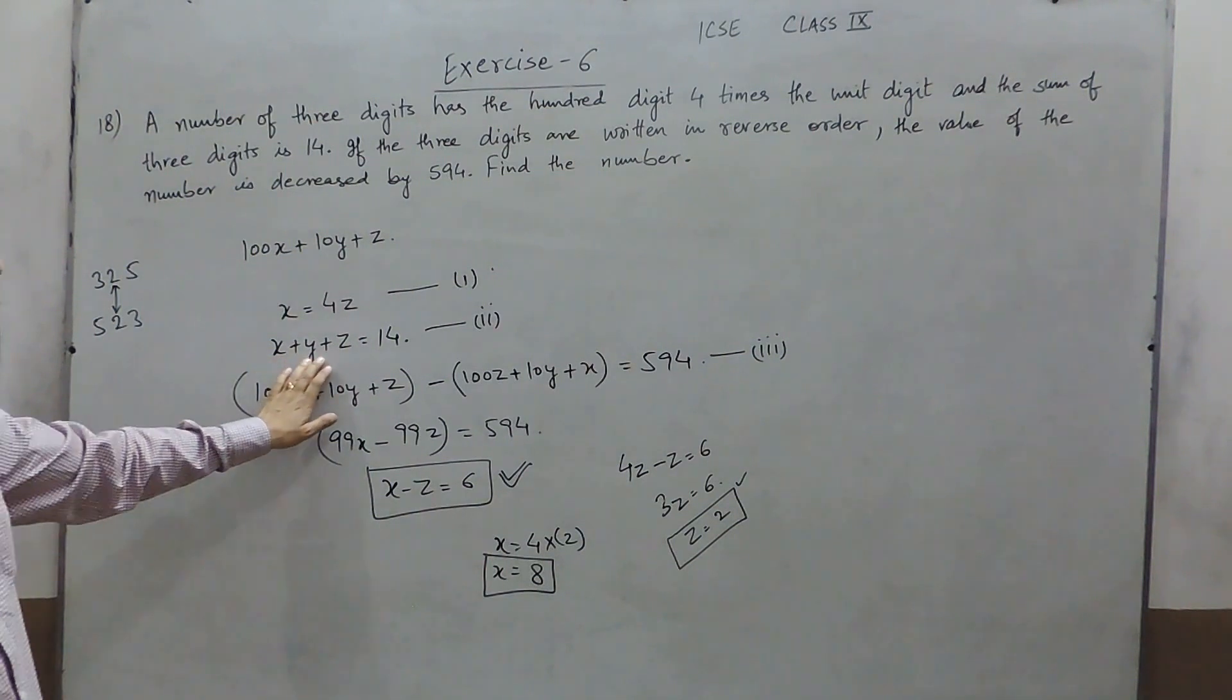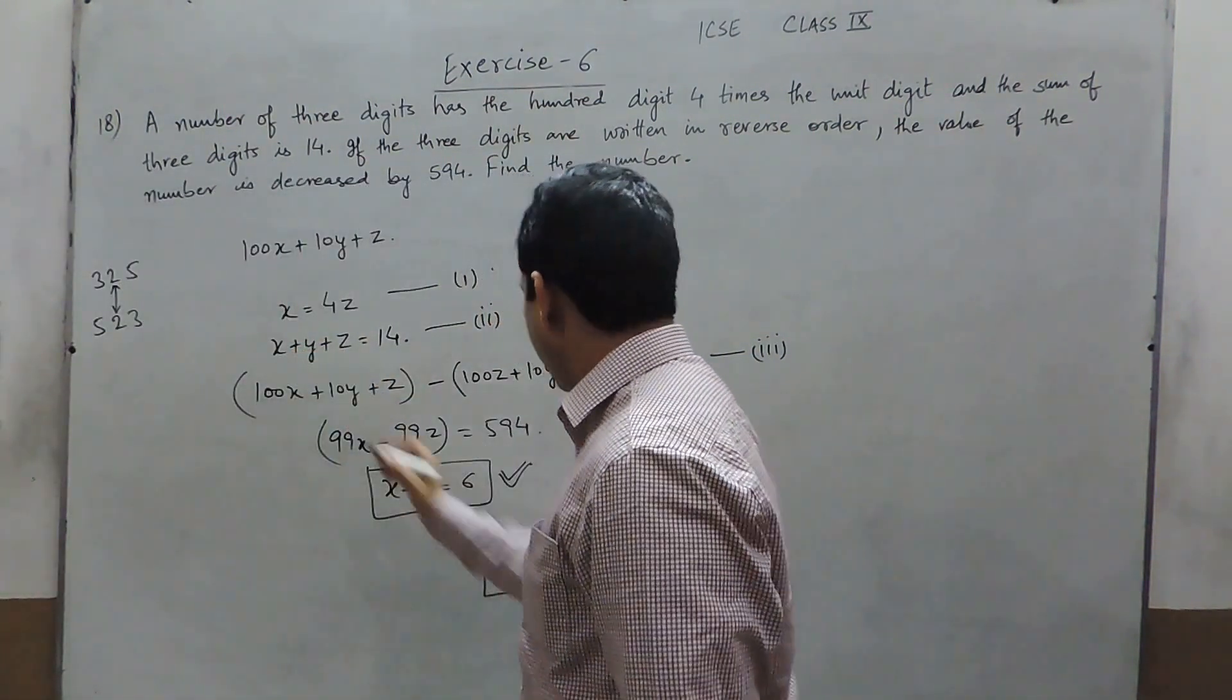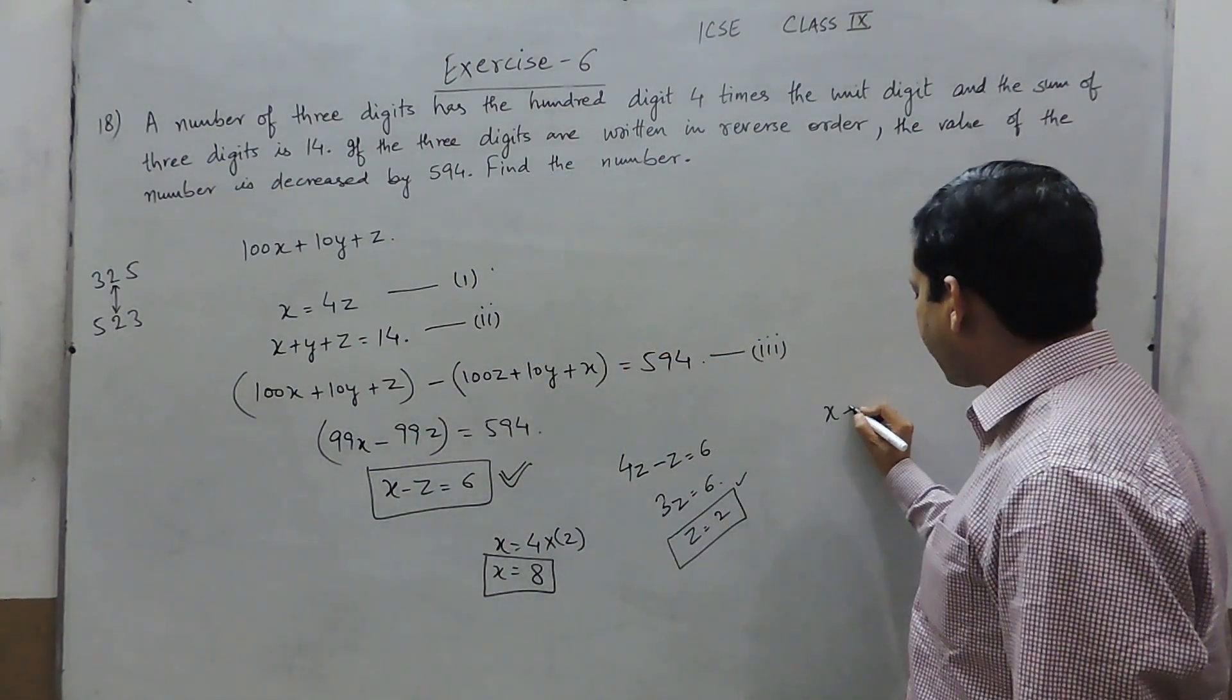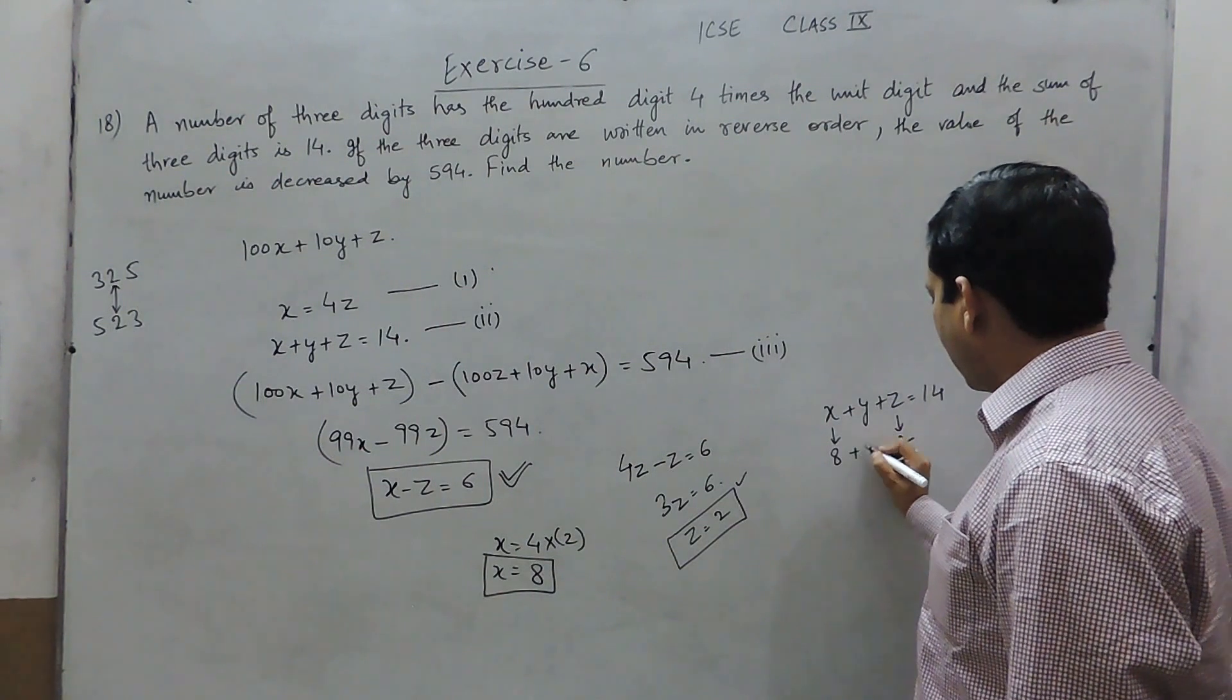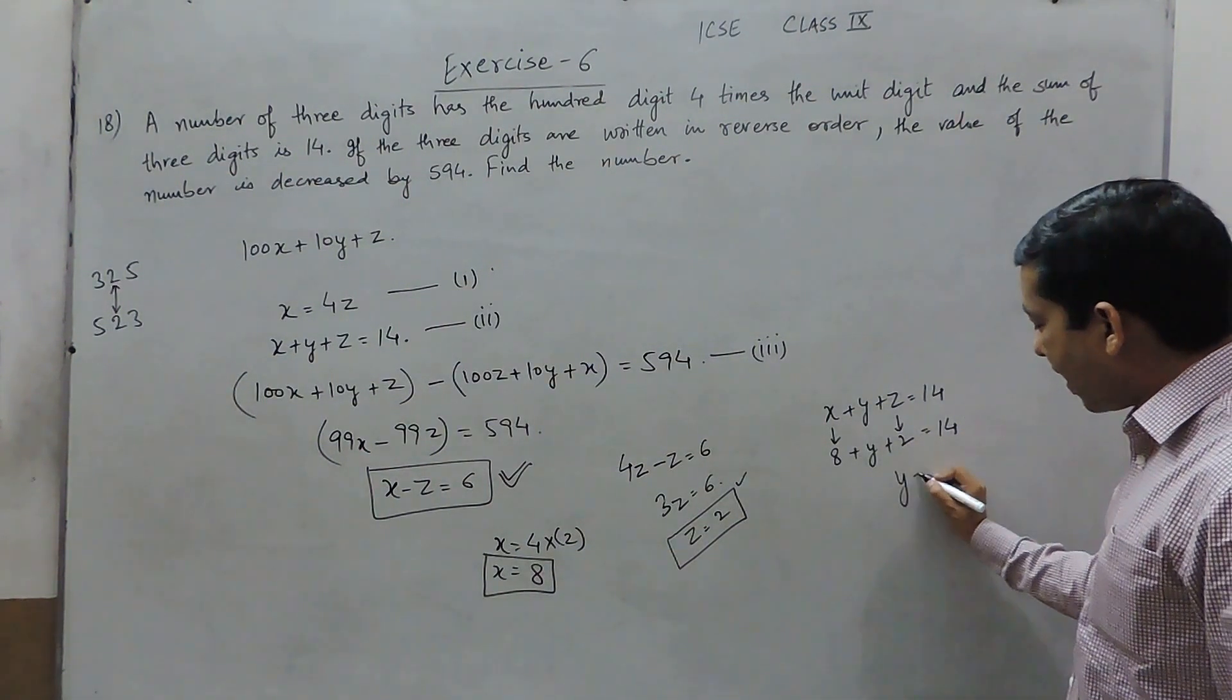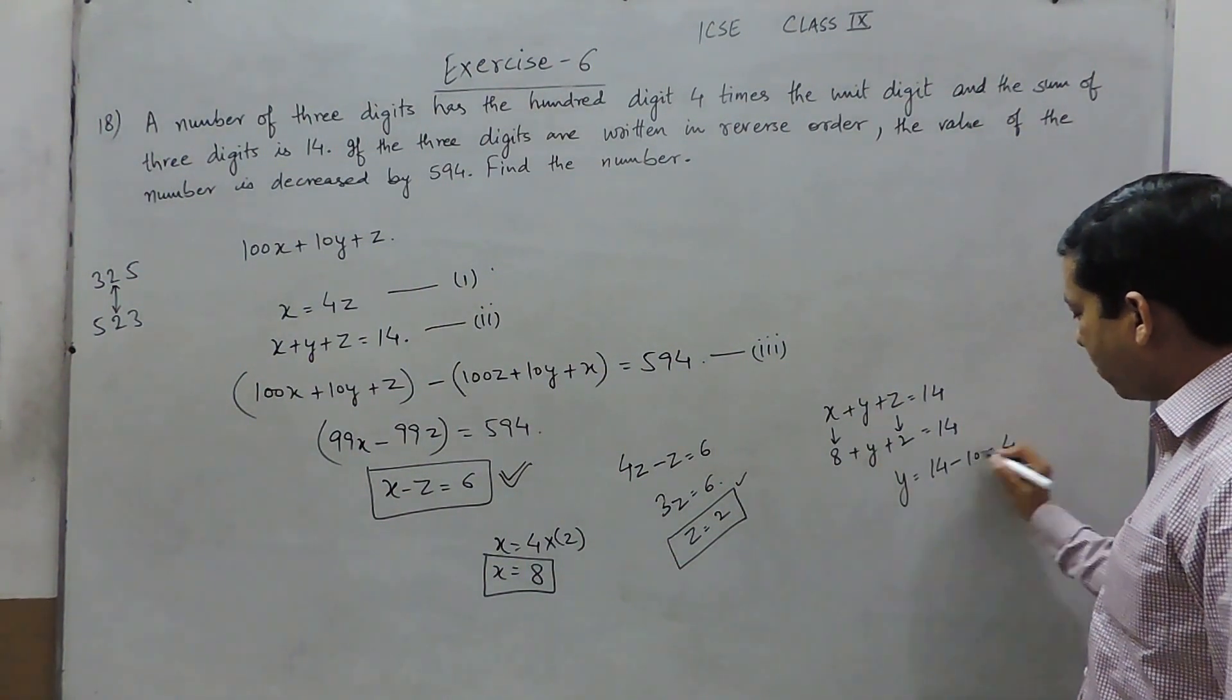We know x plus y plus z equals 14. The value of x is 8 and the value of z is 2. So we have to solve for y. The value of y becomes 14 minus 8 plus 2, which is 14 minus 10, and that is 4.